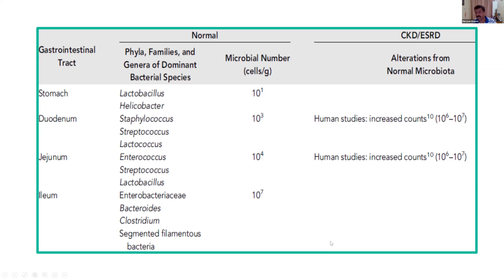But in human studies, when there is a patient with CKD or ESRD, there is an overgrowth of the normal microbiota. Even in the duodenum and jejunum, you can have up to 1 million of different microbiota in the upper part of the duodenum, jejunum, and ileum also. This is the alteration seen which is different from the normal human gut.